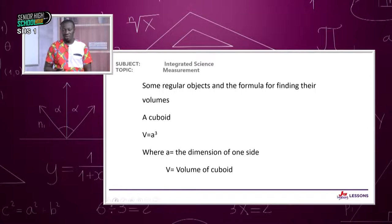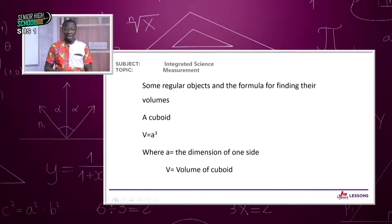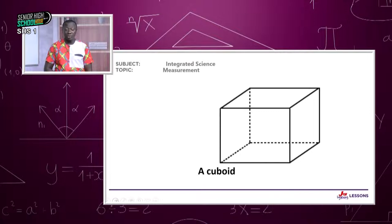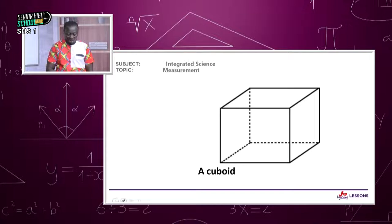A cuboid is a regular solid object with all three dimensions the same. Its volume is found by multiplying one side by itself three times: V equals A cubed, where A is the dimension of one side. You only need the dimension of one side and multiply it three times by itself to get the volume.